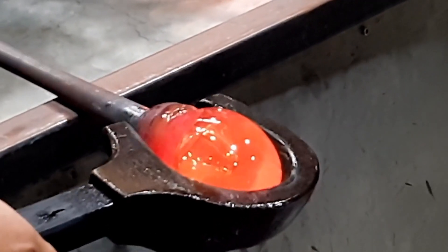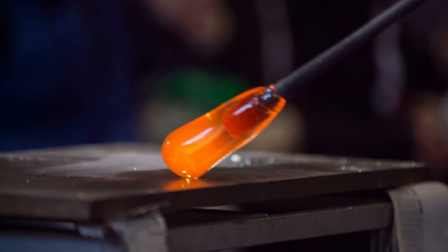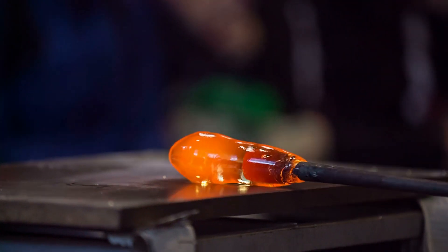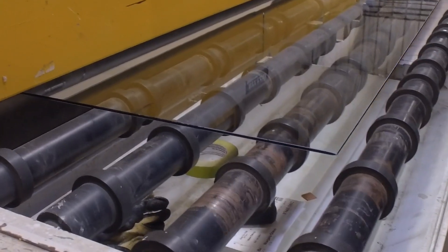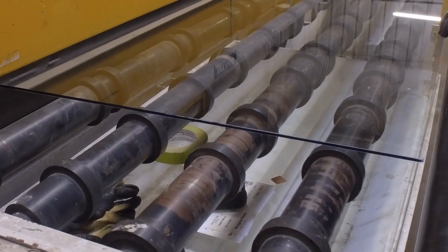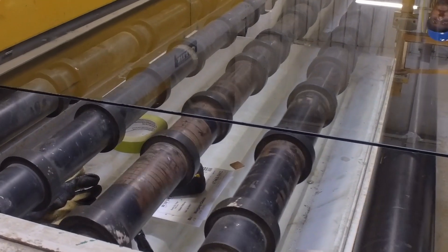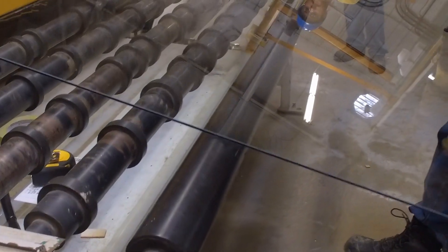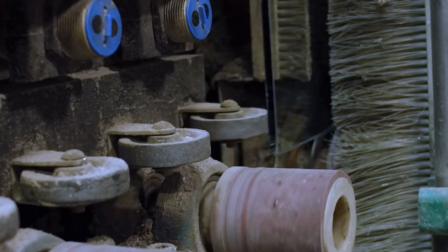Each of these techniques imparts unique characteristics to the finished product. The allure of a hand-blown glass vase lies in its slight imperfections, reflecting the uniqueness of the artisan's touch. On the other side, a pressed glass dish offers a combination of sturdiness and precision, making it ideal for everyday use. Meanwhile, drawn glass, with its sleek and uninterrupted surface, is perfect for allowing light to pass through windows or facilitating illumination in fiber-optic cables.